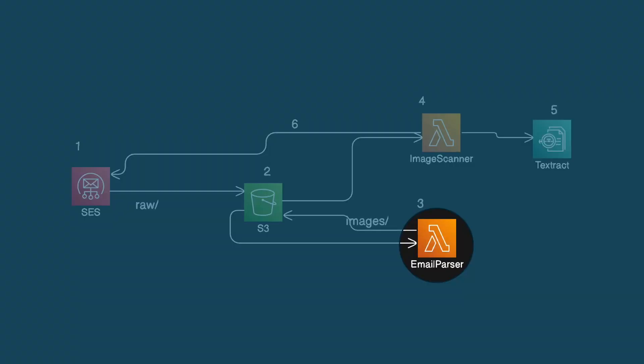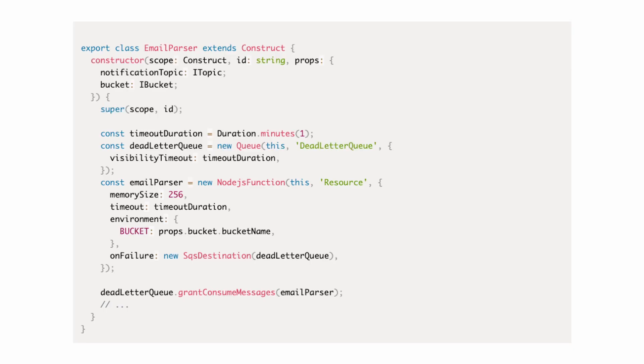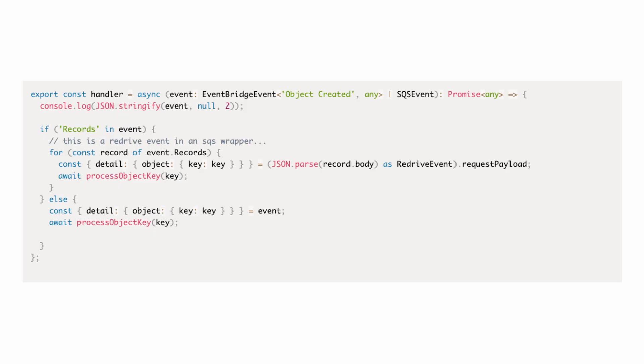What about the Lambda functions — if they fail, can we recover without requiring anything from the customer? This is definitely a place to add resiliency. I could write the handler to watch for errors and put messages in a queue for reprocessing, but that wouldn't catch core execution problems like bad dependency references. So I'll use Lambda destinations and have any failures drop messages into an SQS queue. I'm also going to update the handler to read and process those queue messages, so failures are automatically reprocessed. I repeated this process for the other Lambda function as well.